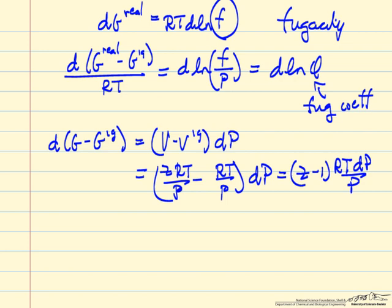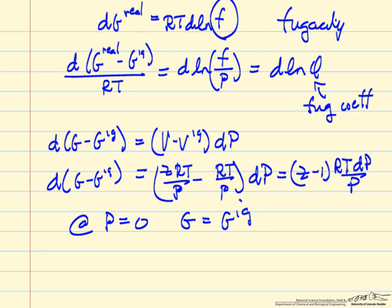So Z minus 1 RT DP over P tells us this change in difference between ideal gas and real gas, and note that as pressure approaches 0, then G approaches the ideal gas value. So the real gas value and the ideal gas value for Gibbs free energy is the same at low pressures where gases become ideal gases.